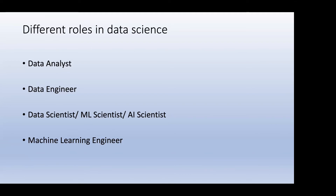Next is the data engineer — sometimes called big data developer, data developer, or software engineer with data technologies. A data engineer is essentially a software engineer who uses tools and technologies for the big data world. You need to be very good at programming and core computer science principles, and know data engineering tools — for deployment, creating data pipelines, or deploying models. If someone is strong in programming and core CS skills and interested in the data field, data engineer is a good path.